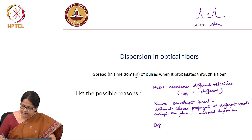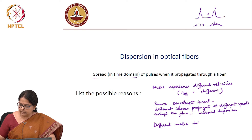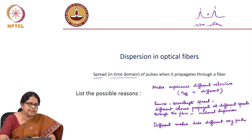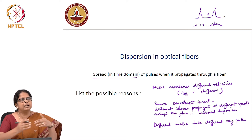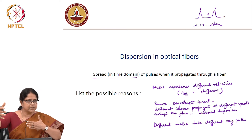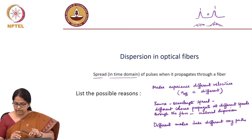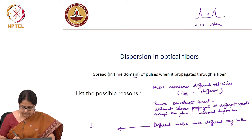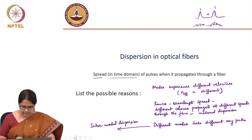Different modes propagate at different angles, taking different ray paths. Because they are taking different paths, all the modes start together when launched, but they arrive at different delays. The same information is carried by different modes but they arrive with different delays, which causes spread in the pulse. This kind of dispersion is called intermodal dispersion.